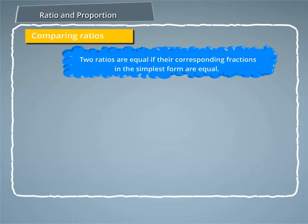From here, it is clear that two ratios are equal if their corresponding fractions in the simplest form are equal. For example, 2 is to 3 and 6 is to 9 are equal because their corresponding fractions 2 by 3 and 6 by 9 are equal.